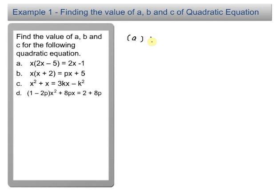Look at A now. You have x times 2x minus 5 equal to 2x minus 1. This is not in the general form of quadratic equation.